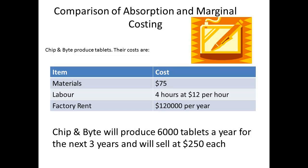Next, we want to consider a comparison of the two methods that looks at the profit calculated by each method. We will consider the production of a tablet computer by Chip and Byte. The material costs are $75 per tablet. Each tablet takes four hours to make with labour costs of $12 per hour. The overheads are the factory overheads at $120,000 per year and intended production is 6,000 units per year, which will sell at $250 each.